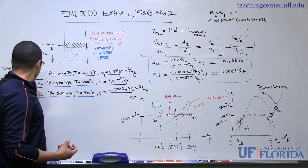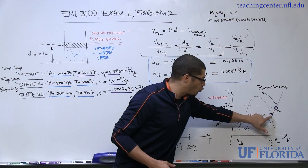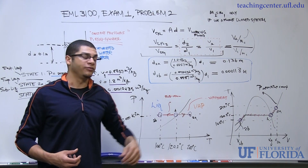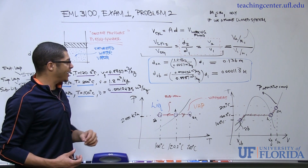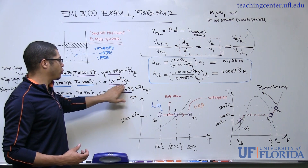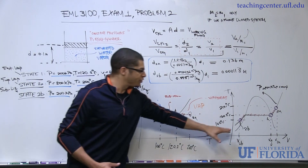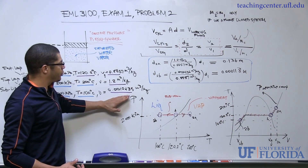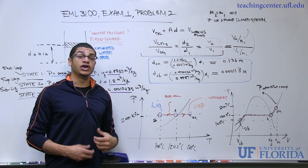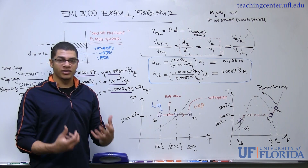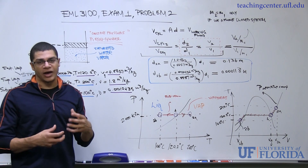We should have physical intuition for these values. State 2A is a superheated vapor — energy was added from the saturated vapor state — so the specific volume should be larger than the initial 0.8857 m³/kg, and indeed 1.2 m³/kg is larger. For state 2B, energy was removed, a phase change occurred, and the fluid was sub-cooled further, giving a very small specific volume of 0.0010435 m³/kg — a couple of orders of magnitude less than the initial value — consistent with a condensed phase where molecular spacing is very close.